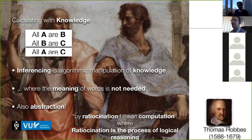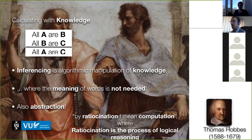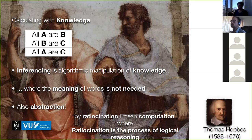That's the basic prospect of knowledge representation: calculating with knowledge. It's about inferencing — an algorithmic manipulation of a symbolic representation of knowledge — but most importantly, one where the meaning of words is not needed. In a syllogism, we don't care what the concepts represented by A, B, and C are. The rule of the syllogism is true irrespective of what those concepts are. Abstraction is fundamental.